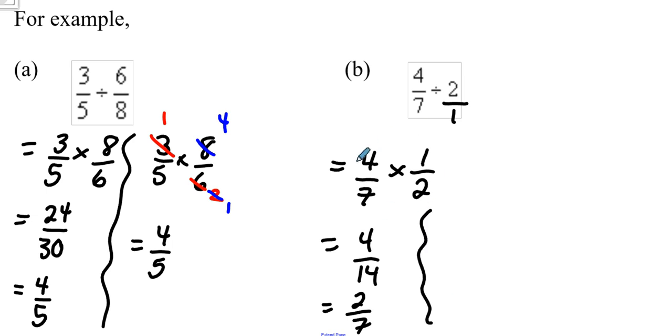Or, at this step here, so 4 over 7 times 1 over 2, we could look to cancel. So for example, the 2 and the 4 cancel. And we could go straight to 2 times 1 is 2, and 7 times 1 is 7.